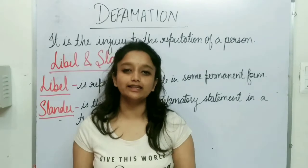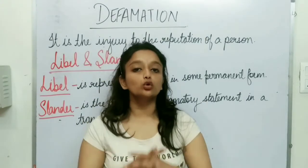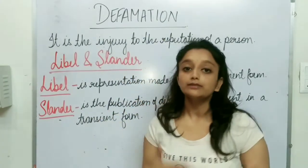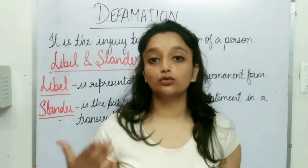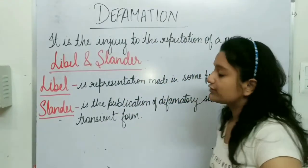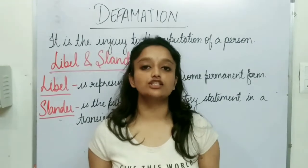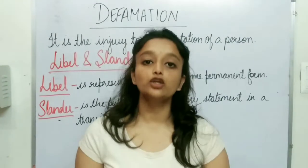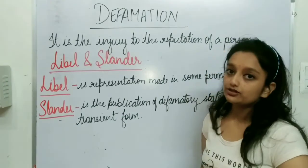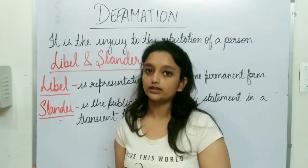So, these are the two actions in defamation: libel, which is in permanent and written form, and slander, which is in transient form — spoken words, gestures, or actions. In these two ways, you can defame another person.